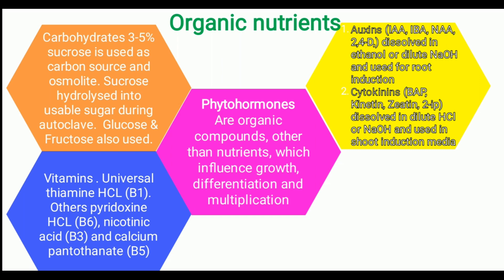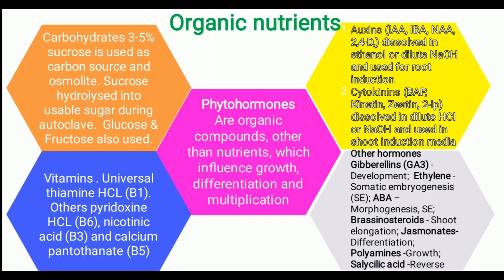In addition to auxins and cytokinins, rarely some other growth regulators are also used. These include gibberellin — popularly GA3 — used for developmental purposes; ethylene, added in somatic embryo medium; abscisic acid (ABA), added for morphogenesis and somatic embryogenesis; brassinosteroids, added for shoot elongation; jasmonates, added to induce differentiation; polyamines, added for growth performance; and salicylic acid, added to reverse the ABA effect. Generally salicylic acid and ABA function oppositely in the tissue culture medium.